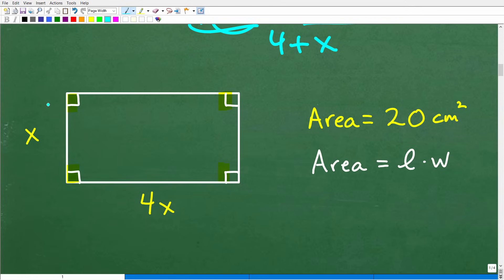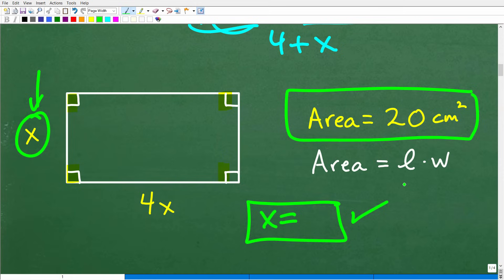Okay, so here is our rectangle. We have the width and we have the length expressed as X and 4X, where X is equal to the width. But we also know that the area of this rectangle is 20 centimeters squared. Now, this is critical because we can't determine what these values or what the value of X is. And, of course, that represents our width and 4X is our length. We can't find what X is unless we have an equation.